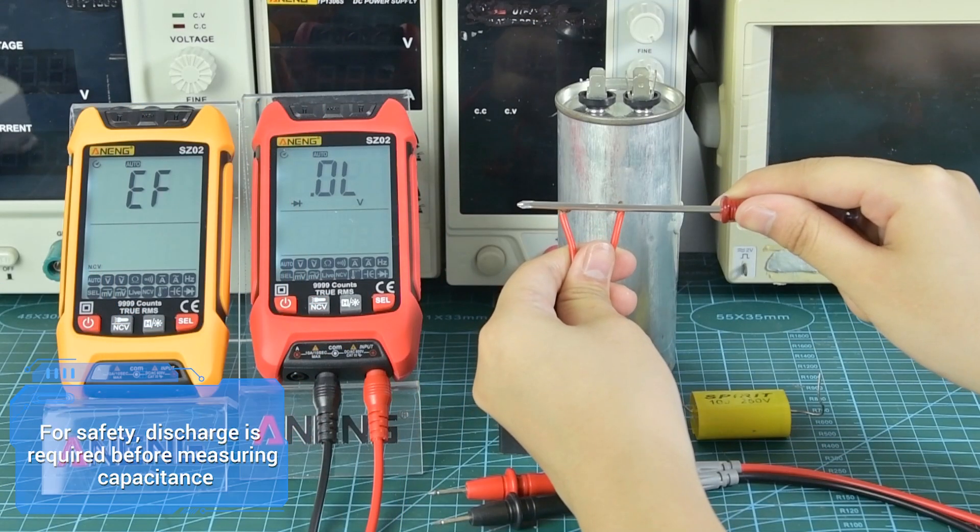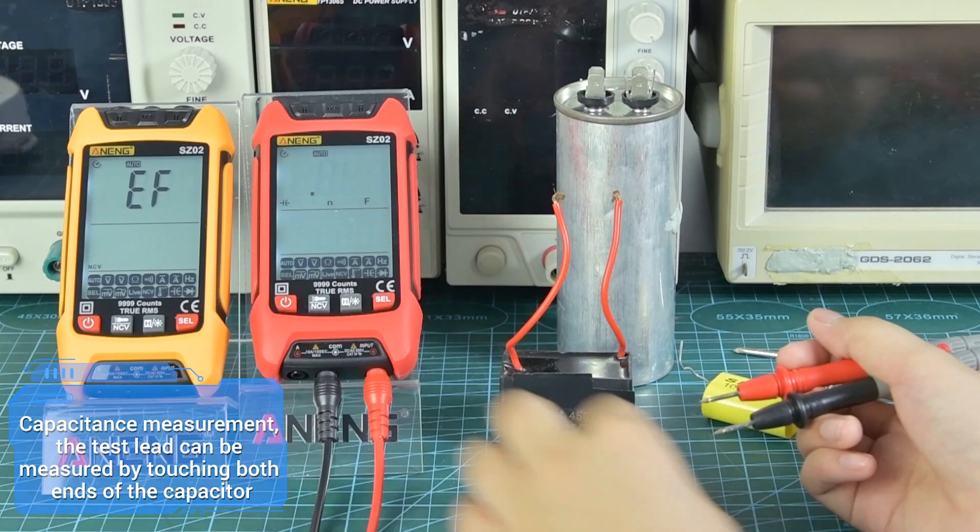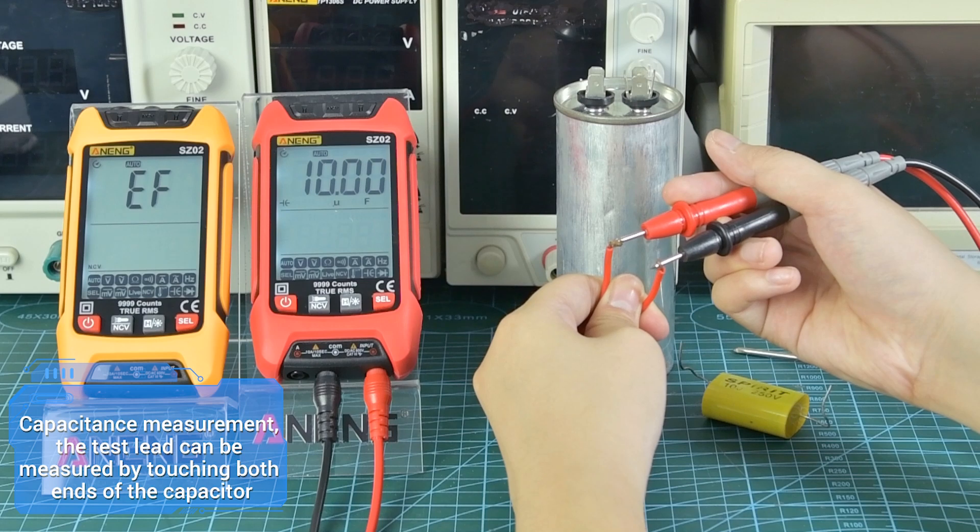For safety, discharge is required before measuring capacitance. For capacitance measurement, touch the test leads to both ends of the capacitor.